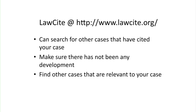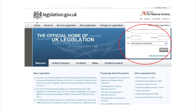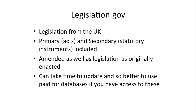LawCite forms part of the AustLII database, but you can also search for cases from other jurisdictions. This works as a case citator, so you can make sure there hasn't been any development with your case and find other cases that are relevant to your point. Moving on to legislation, there's a site called legislation.gov which includes legislation from the UK. This includes primary and secondary legislation — so acts and statutory instruments. It has acts as amended as well as legislation as originally enacted, which can be quite useful. However, it can take time to update, so it is better to use paid-for databases if you have access, as these are updated more regularly.